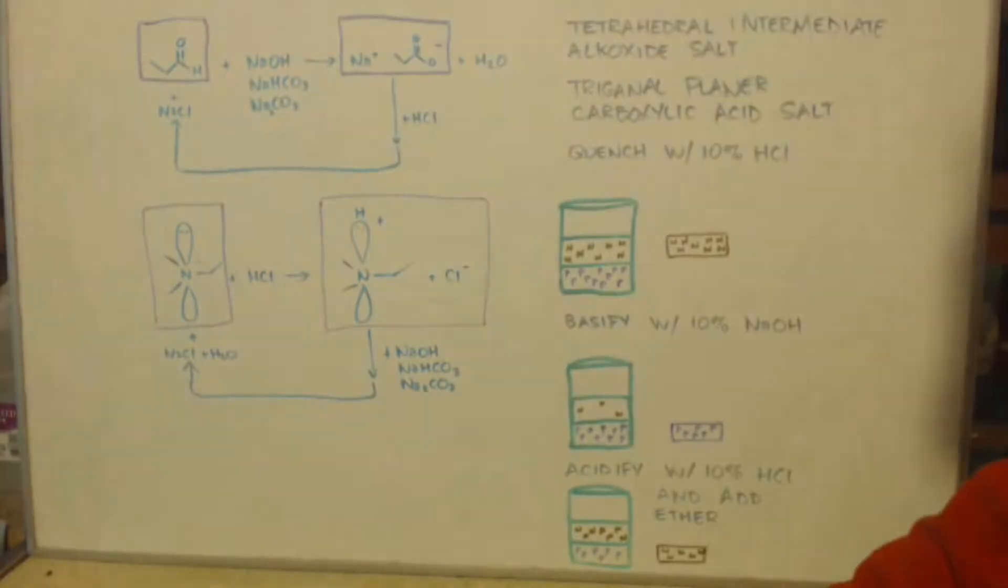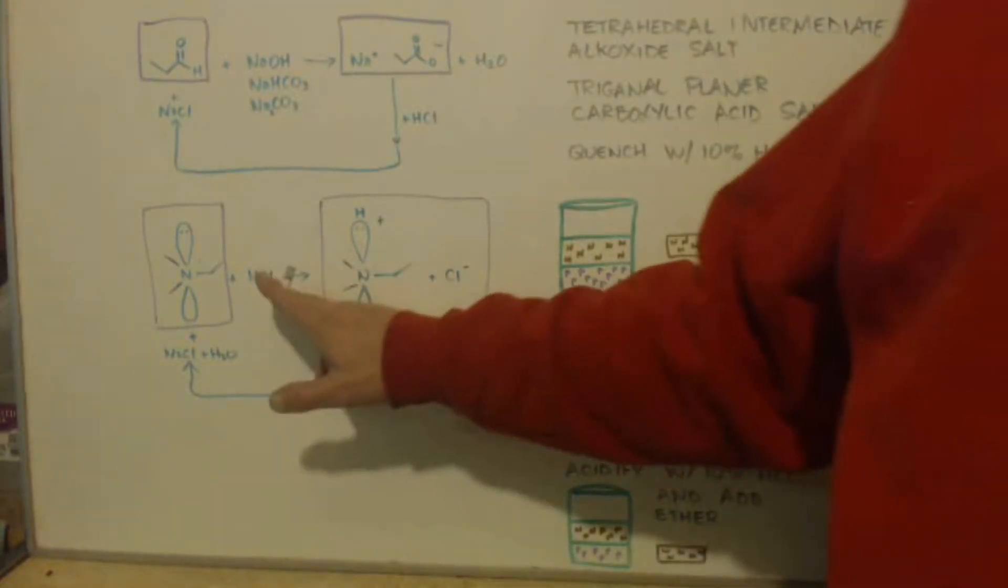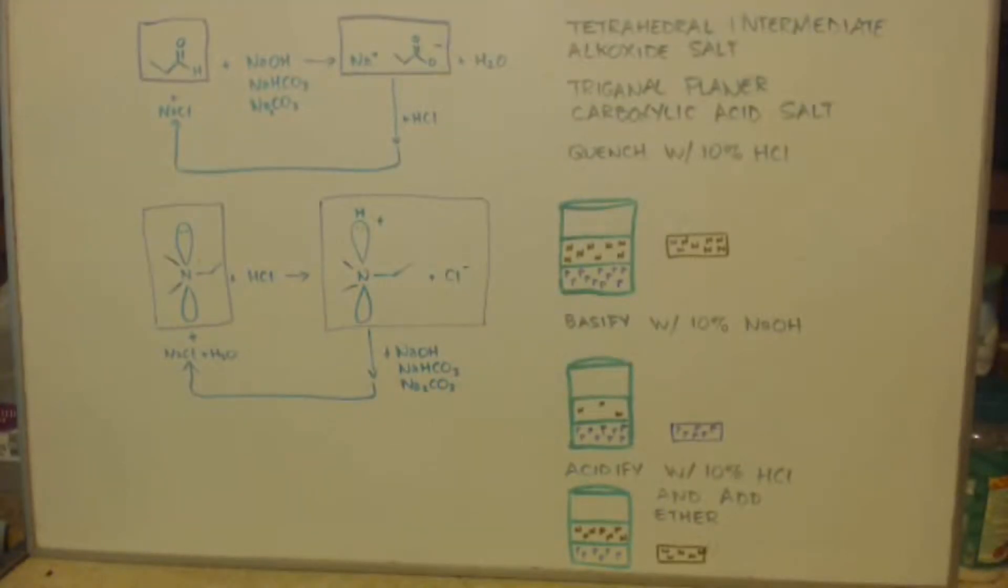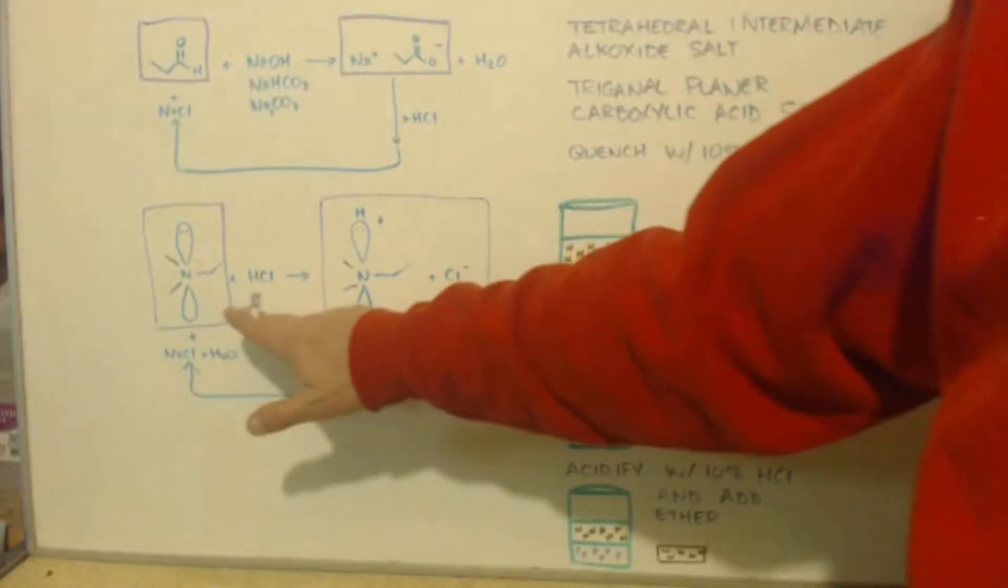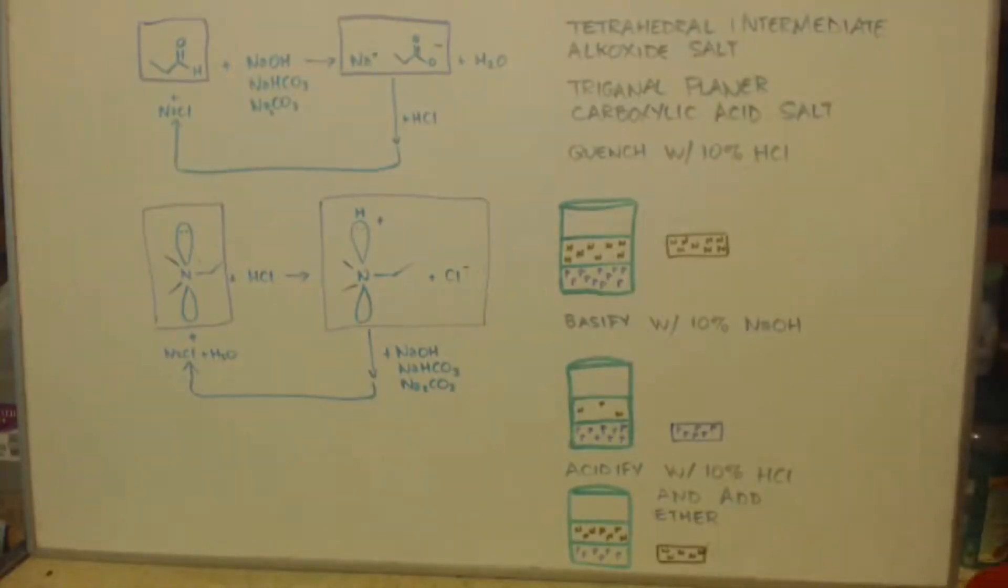Here's your amine. Now, how do you make it into a salt or polar? You react, you do the opposite. You react it with HCl. Because it has these lone pairs up here, the proton will jump up onto the lone pairs and you'll have an ammonium salt.